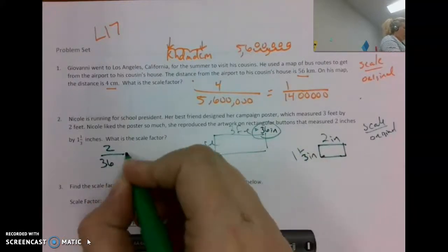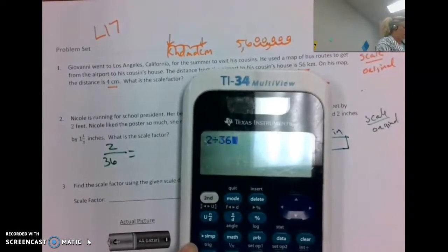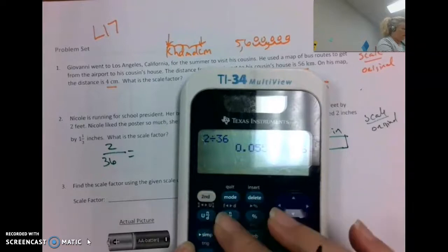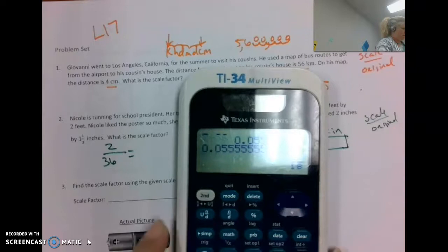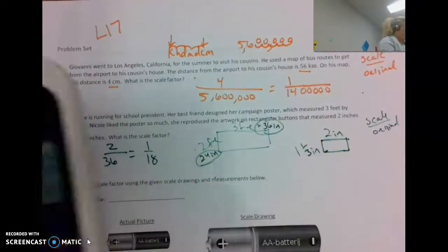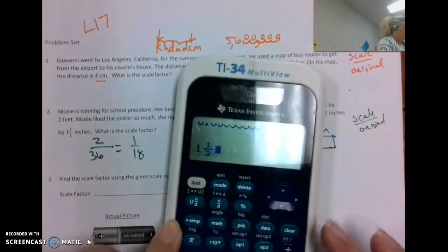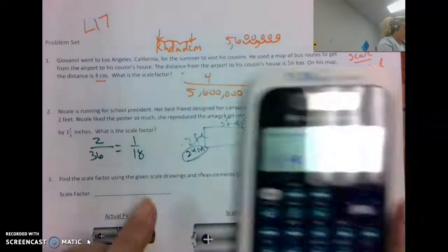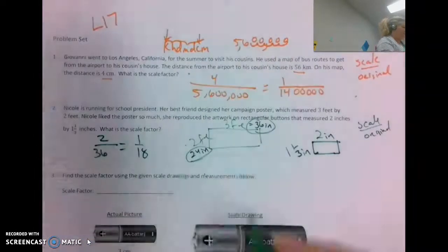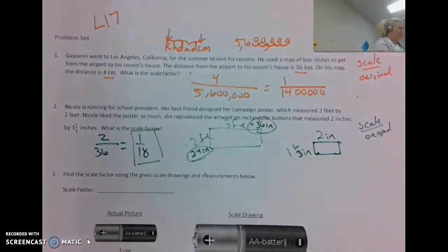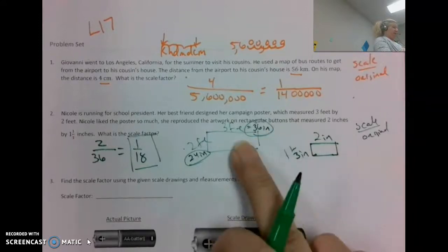So the scale is 2 inches over the original 36 inches. Dividing gives 1/18. Let's double-check using the other dimension: one and one-third divided by 24 also gives 1/18. So the scale factor is 1/18 — for every one inch on the button, there are 18 inches on the poster.